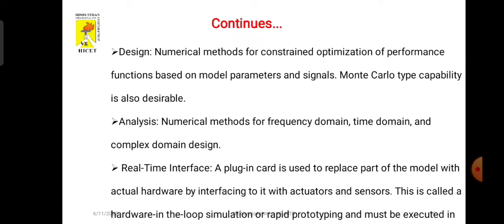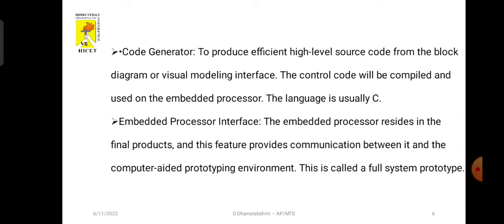Next is design code generator. Code generator produces the codes, higher language codes from the block diagram. This is basically in C. Next, embedded process interface. It produces communication between the computer and the sensors and actuators. Examples for communication cables are Ethernet, PROFINET, PROFIBUS, etcetera. This is called a full system prototype.